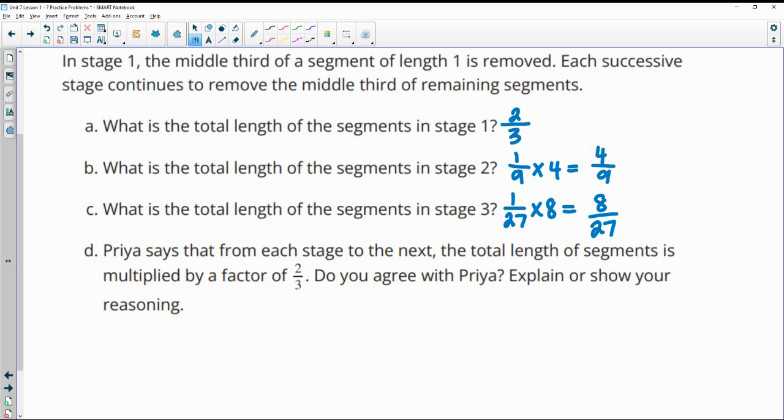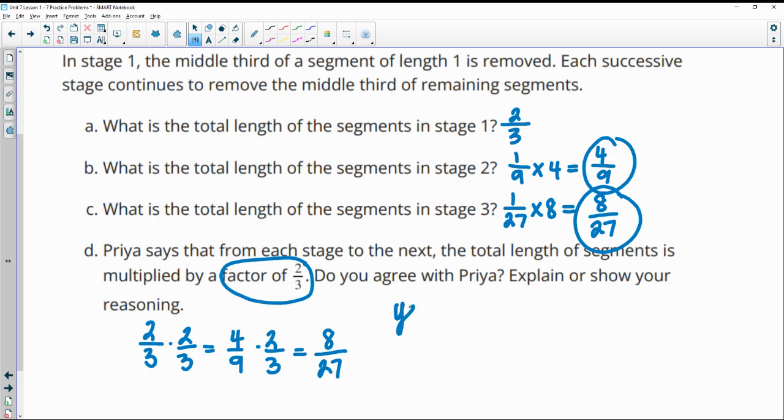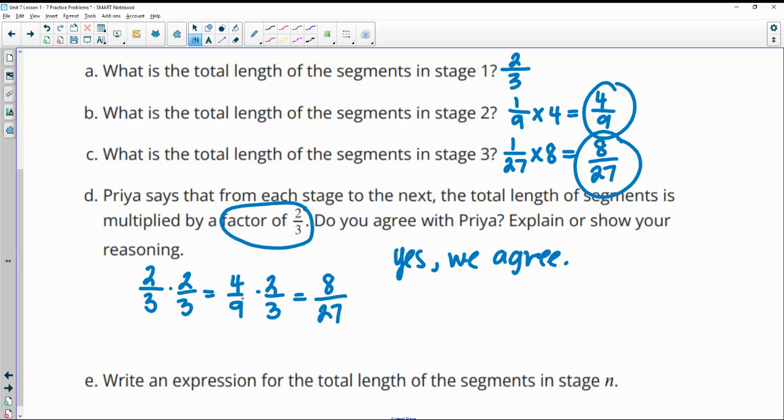And then it says, Priya says that from each stage to the next, the total length is multiplied by a factor of two-thirds. Do you agree? So we could take a look at the first one and say two-thirds times two-thirds. That's four over nine. So that matches what we got. And then if we multiplied this by two-thirds again, that would be eight on top and 27 on bottom. And that is what we got here. So it's looking like yes, we agree. And then you could just say there's going to be two-thirds of it left over each time. So it would make sense that two-thirds is left after each piece is removed.